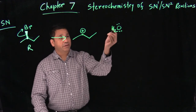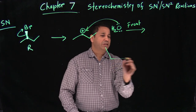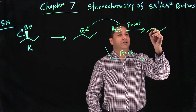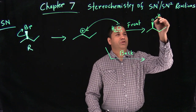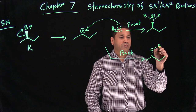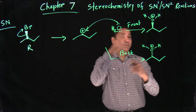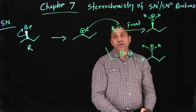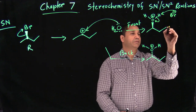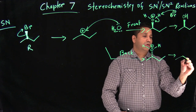The nucleophile has a 50% chance to attack from the front and a 50% chance to attack from the back. If it attacks from the front, you get OH2+ on one face; if it goes from the back, you get OH2+ on the other face. Since you get a positive charge on your product which is not stable, Br⁻ acts as a base and does an acid-base reaction, giving you the stable alcohol product — OH on the front and OH on the back.